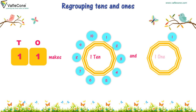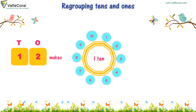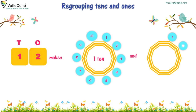One, two — twelve makes one ten and one, two. Two, one.